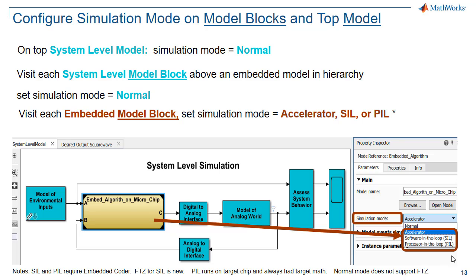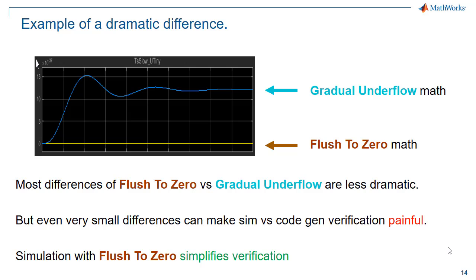Configuring the simulation mode has an important but subtle difference. On the top-level system model, set simulation mode to normal in a standard way. Next, visit each system-level model block — not model, but model block — and, as shown in the dialog below, set the model block to have normal mode simulation. You also need to visit each embedded model block and set the simulation mode to accelerator, SIL, or PIL. The plot on this slide shows an example of the dramatic differences that can occur due to flush to zero versus gradual underflow. Most differences are not that dramatic, but even small differences can make simulation versus embedded verification painful. One of the values of the ability to simulate with flush to zero is simplified verification workflows and earlier discovery of problems.